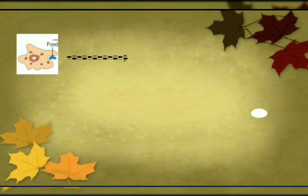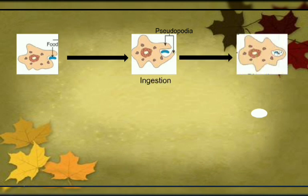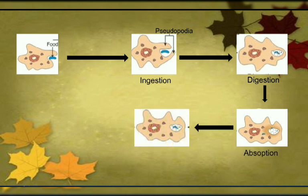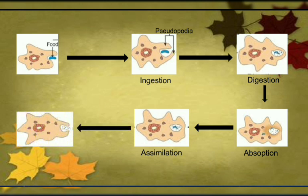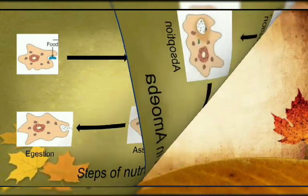From the diagram: the food particle is captured with the help of pseudopodia — that is the ingestion process. Next, digestion: one vacuole covers the food particle and breaks it down. Next, absorption: maximum vacuoles are present inside and absorb the food. Next, assimilation — taking energy from the absorbed food. Last, egestion — one vacuole comes to the body surface and removes all waste material. These are the steps of nutrition in amoeba.